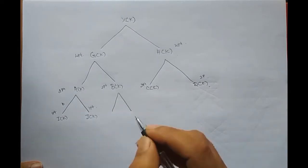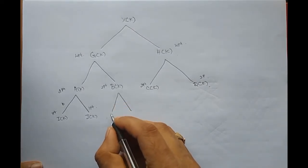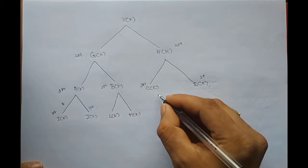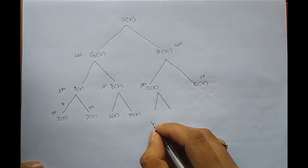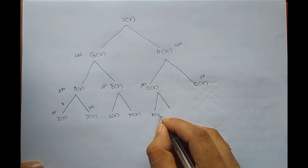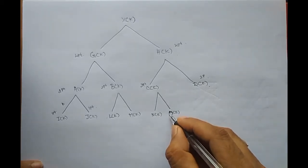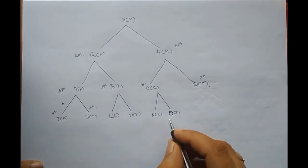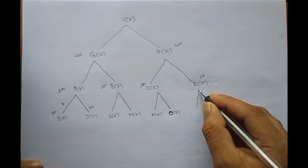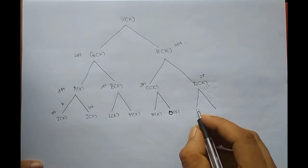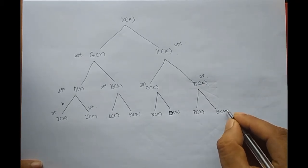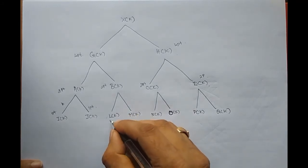And we are going to decompose these 2 into 1-point DFT and we will call them l of k and m of k. And again this has to be decomposed into 2 1-point DFTs and we will call them n of k and o of k. And the d of k sequence I am going to decompose into p of k and q of k. And all these are 1-point DFTs. I am just randomly choosing these letters.